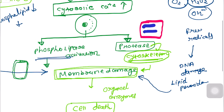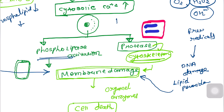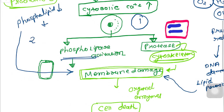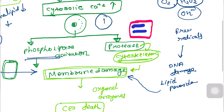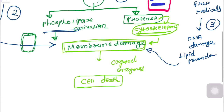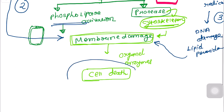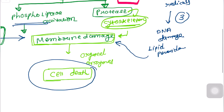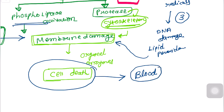So the membrane is damaged through multiple pathways: first, due to increased cytosolic calcium; second, due to decreased phospholipid production; and third, due to free radicals and lipid peroxidation. All of these lead to cellular death.